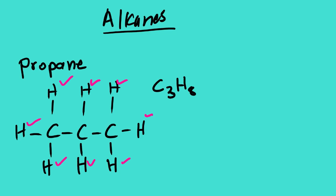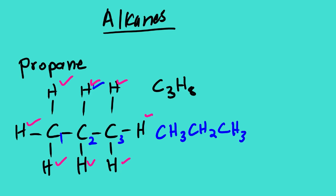Looking at the condensed formula for propane: the first carbon has three hydrogens, the second has two, and the third has three. So the condensed formula is CH3CH2CH3. For the line-angle structure, propane has three carbons represented as a two-segment zigzag line. This line-angle structure represents propane.